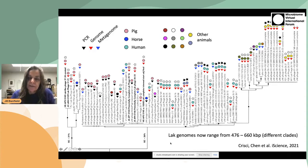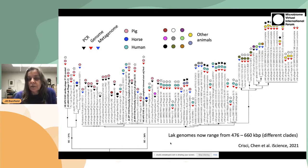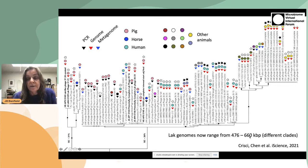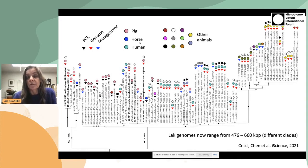As part of this analysis, we determined that the LAC phage genomes are not as constrained as we first found. Previously the genomes were all close to 540 KB. Now we have genomes that range from 476 to the huge size of 660 KB, this largest one being found in a horse. These genomes are manually curated to completion, so we do know the genome size.